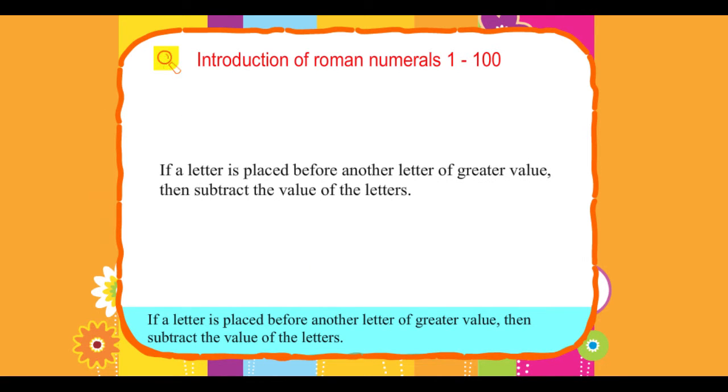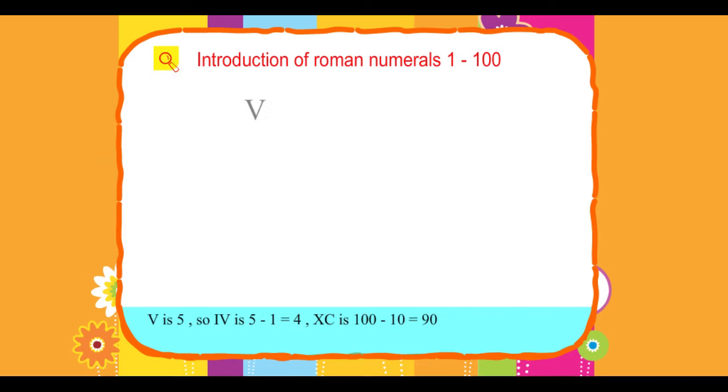Rule 2: If a letter is placed before another letter of greater value, then subtract the value of the letters. Example: V is 5, so IV is 5 minus 1 equals 4.